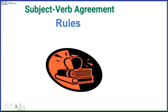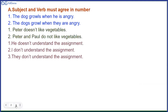When we do subject-verb agreement, first of all it is very important for you to understand what is a subject in a sentence. Look at these sentences. The first sentence is: the dog growls when he is angry. What is the subject here? The dog. Why? Because the dog is the doer — the dog is doing an action. What action? Growling.